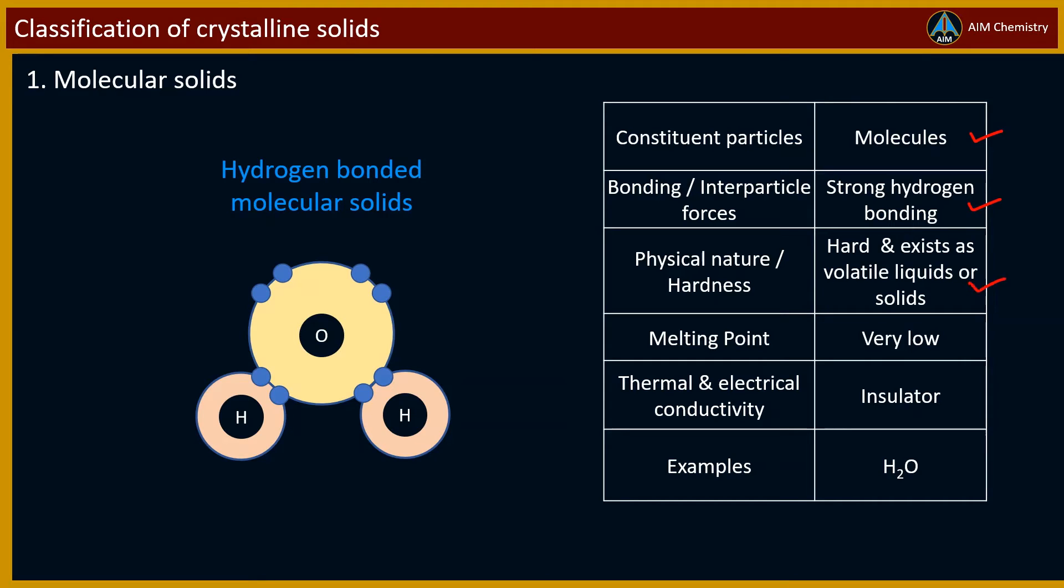These solids are hard in nature and exist as volatile liquids or solids at room temperature and pressure, and have low melting point. They are non-conductors or insulators. Example of these solids is H2O.